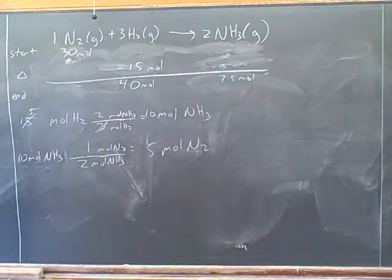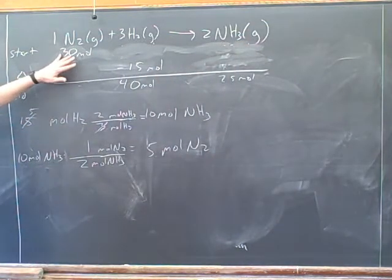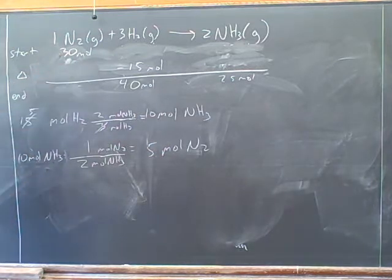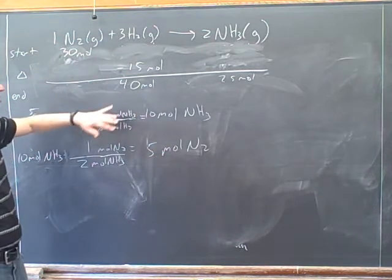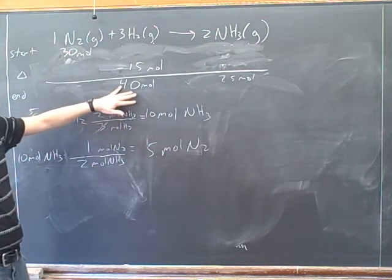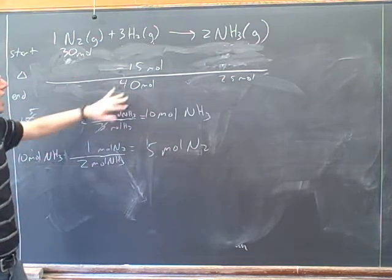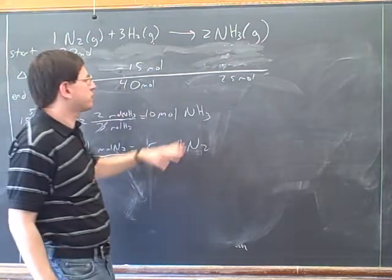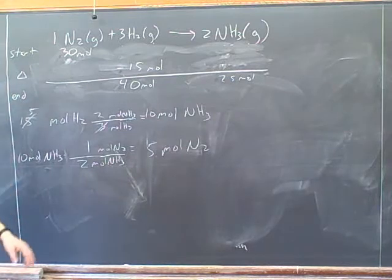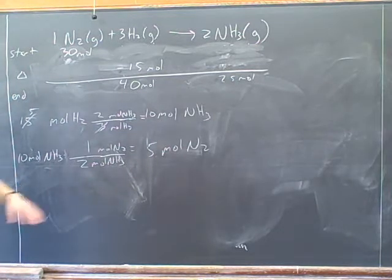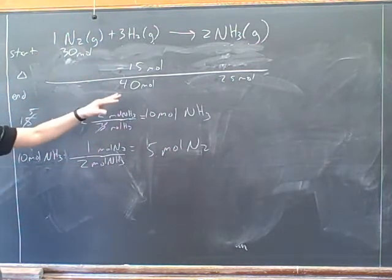They would say something like: a reaction begins with 30 moles of nitrogen, it uses up 15 moles of hydrogen gas to produce 40 moles of hydrogen gas, and it also produces 25 moles of ammonia. Then it would be your job to process all of those numbers and decide where they go in the table.